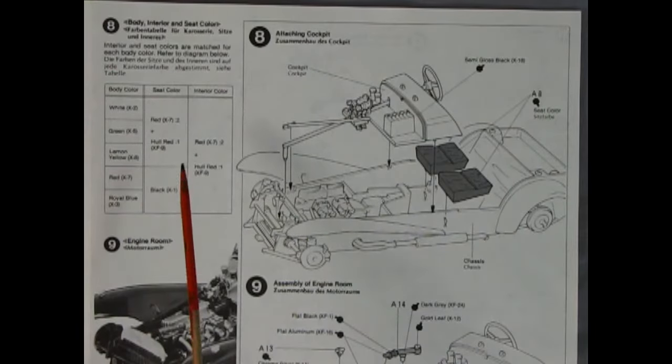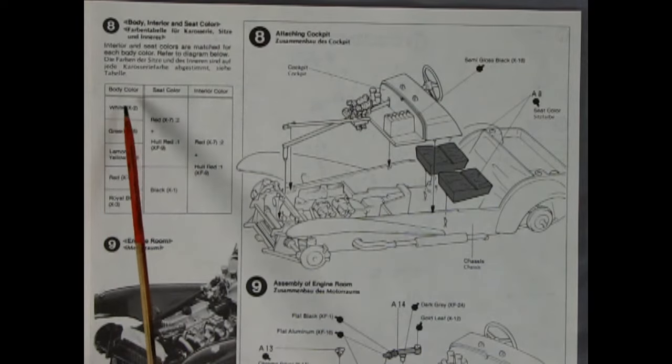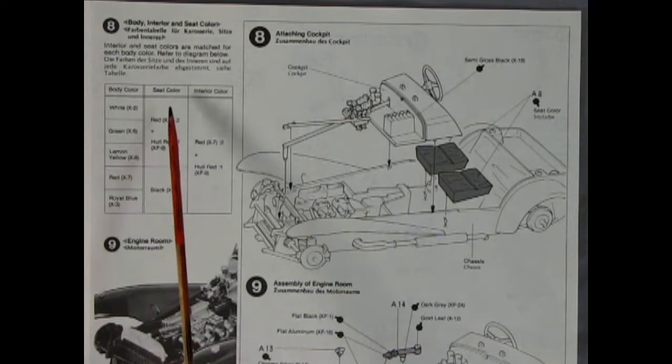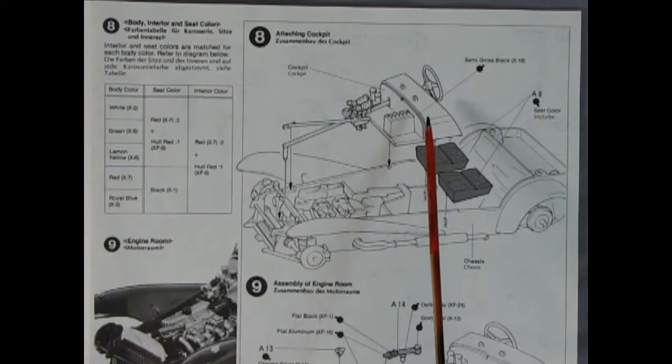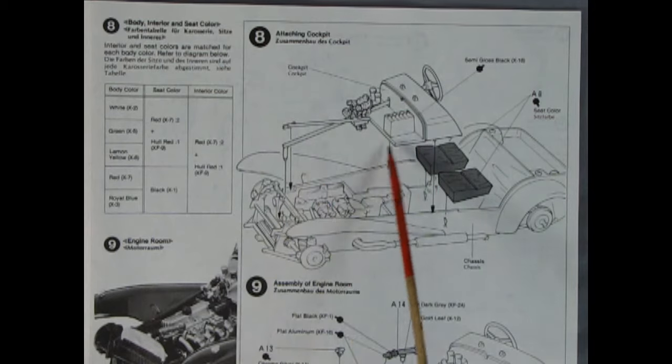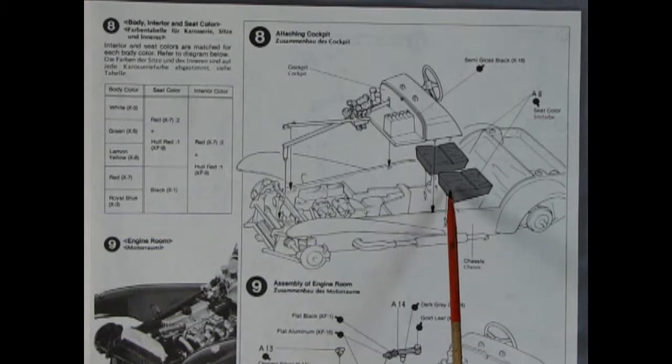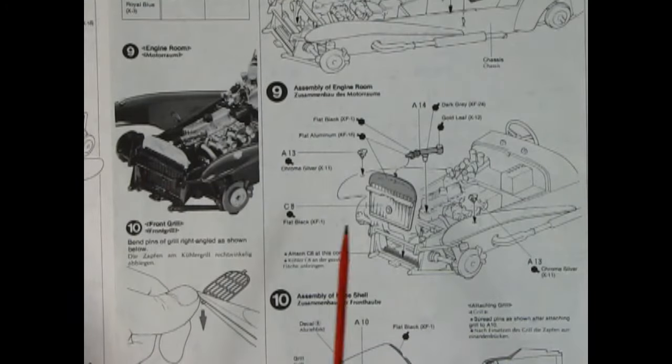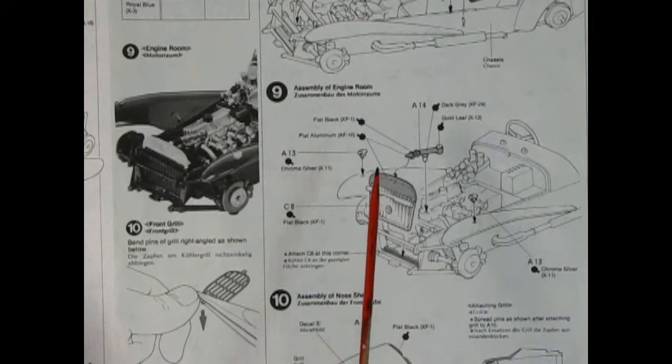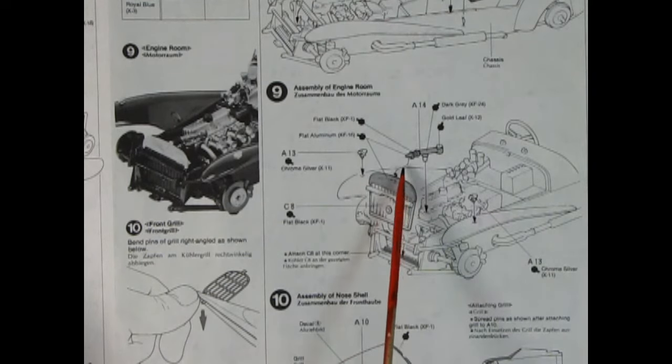Panel eight includes this really nice paint chart that shows the body colors down the side, these seat colors in the middle that go with the body colors and our interior color as well. Here we have the top of the instrument panel and our battery being dropped into place and the bottom of the bucket seats up front. Panel nine shows our engine room which includes our radiator, our radiator cap and the upper radiator hose with thermostat.